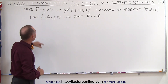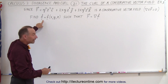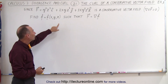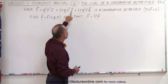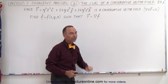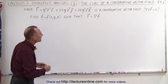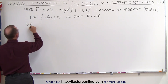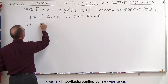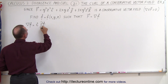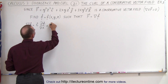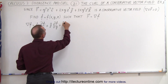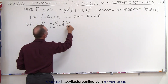Now assuming that's the case, they want us to find another function — not a vector function, but a scalar function of the variables x, y, and z — such that the vector field is equal to the gradient of that function. The gradient of f is equal to i times the partial of f with respect to x, plus j times the partial of f with respect to y, plus k times the partial of f with respect to z.